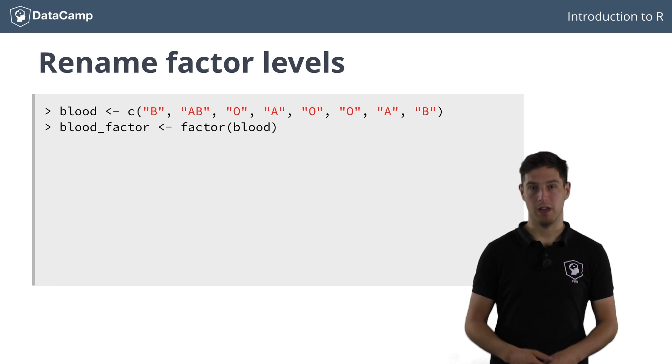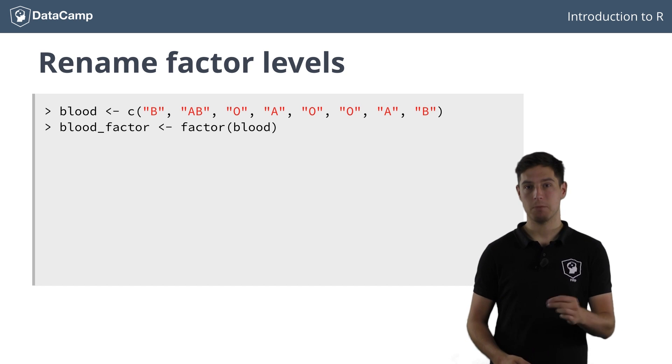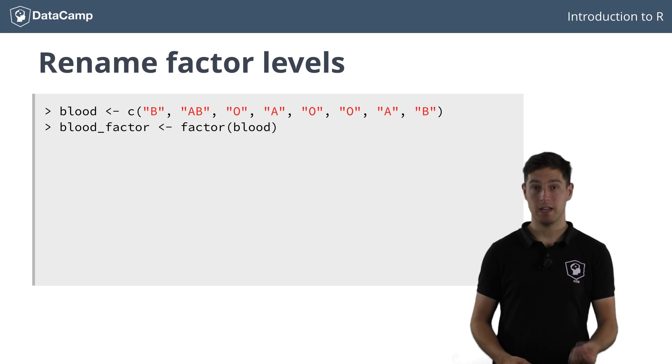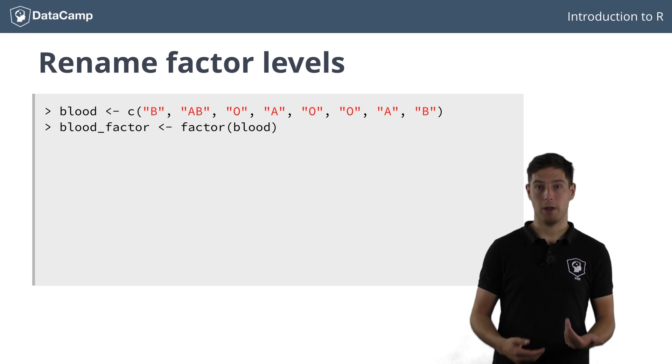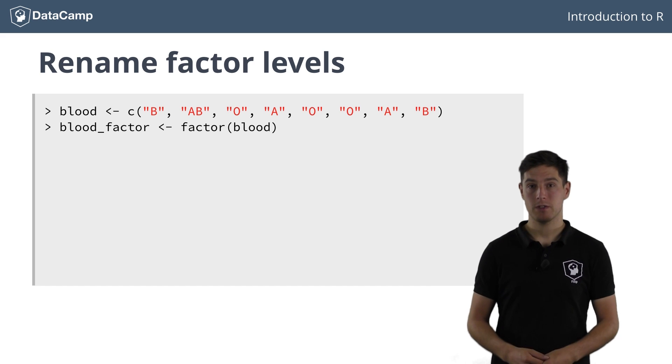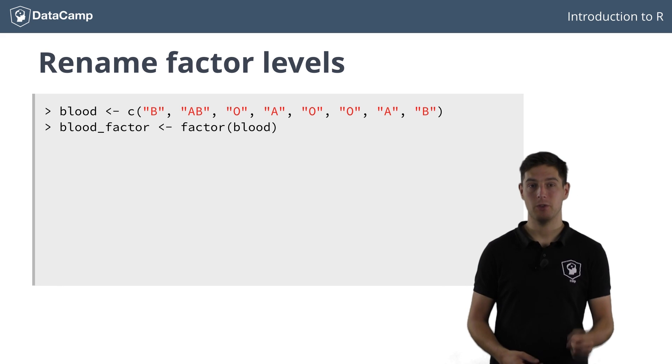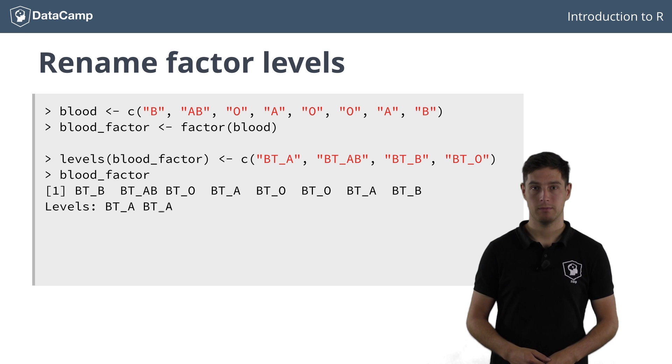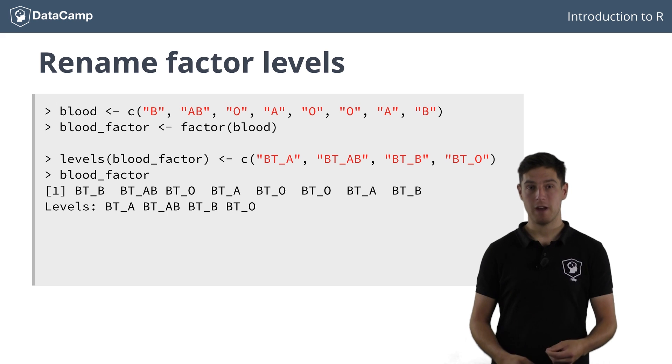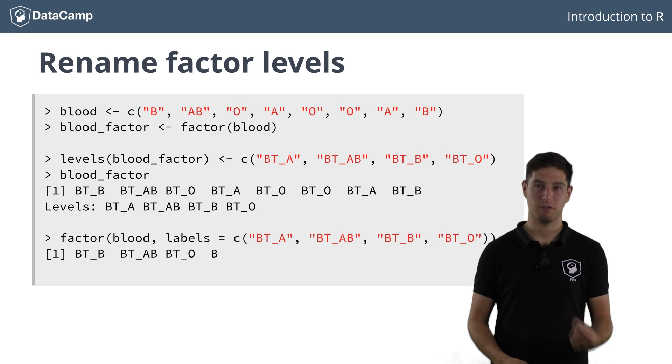Next to changing the order of the levels, it's possible to manually specify the level names, instead of letting R choose them. Suppose that for clarity, you want to display the blood types as BTA, BTAB, BTB, and BTO. To name the factor afterwards, you can use the levels function. Similar to the names function to name vectors, you can pass a vector to levels blood_factor.